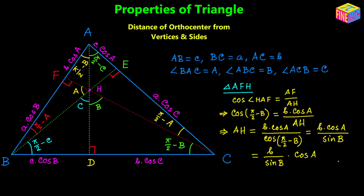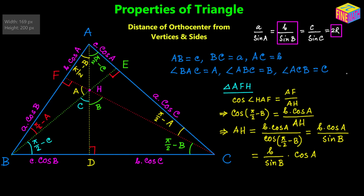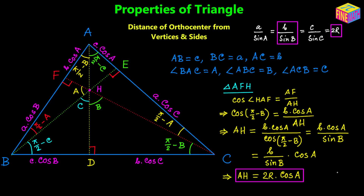We can write this as (b/sin B)·cos(A). By the sine rule for the original triangle, a/sin A = b/sin B = c/sin C = 2R, where R is the circumradius. So b/sin B = 2R, giving us AH = 2R·cos(A). This is the distance of the orthocenter from vertex A.